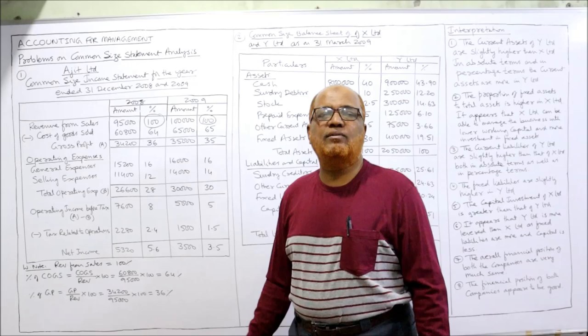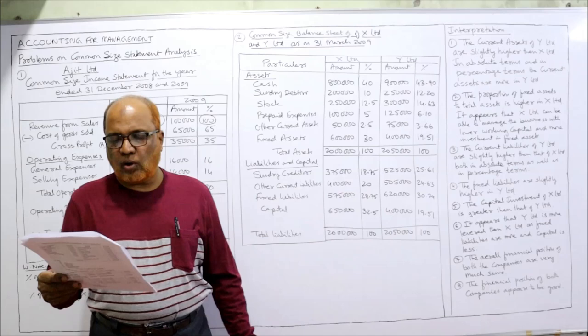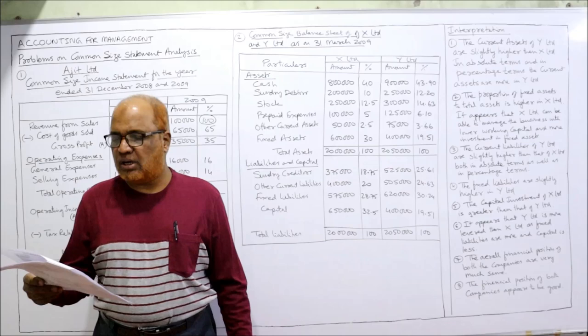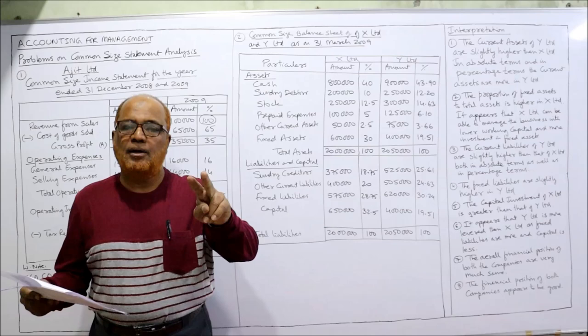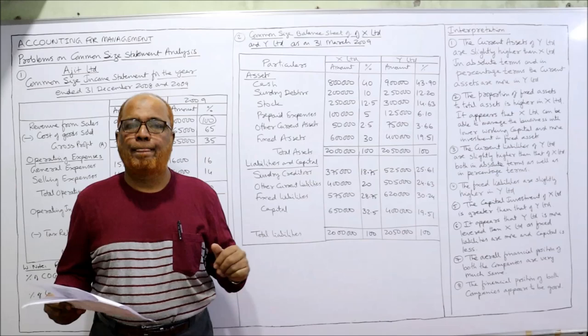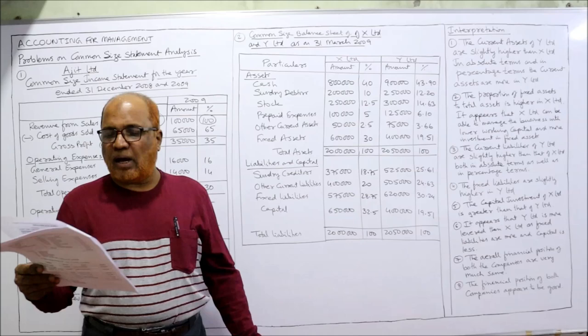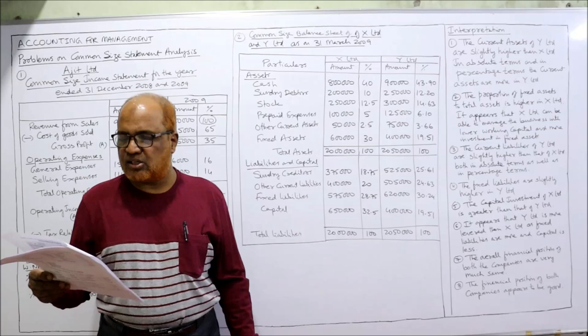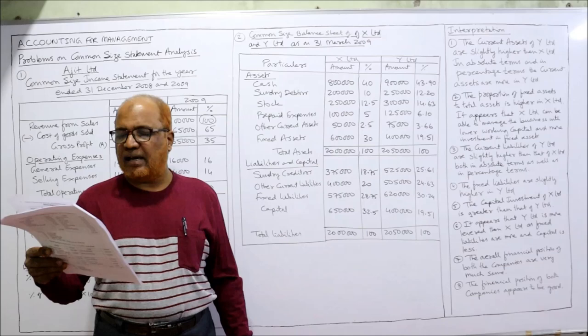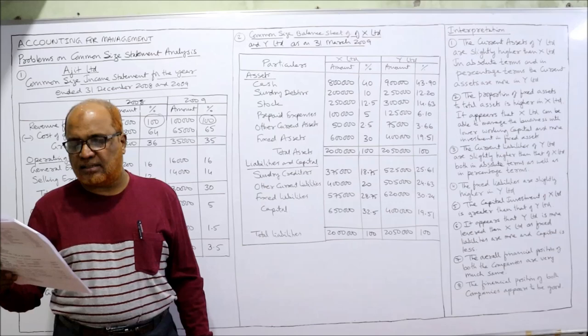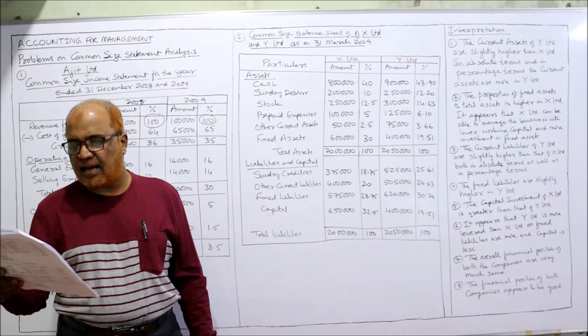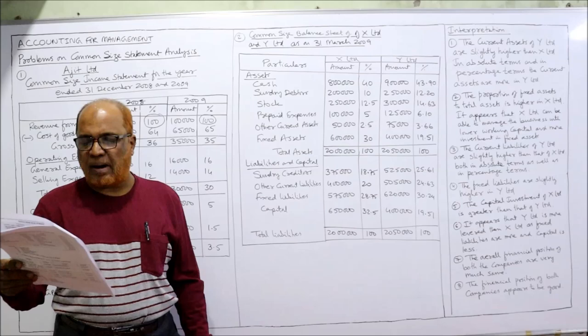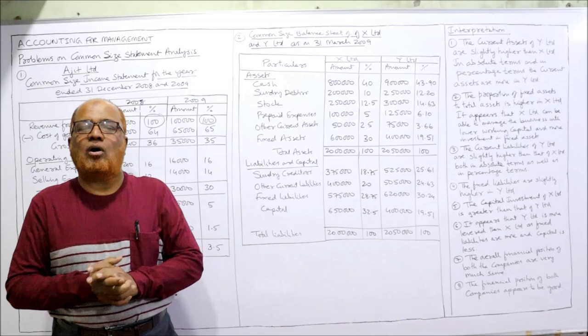The next problem: the following are two balance sheets of X Limited and Y Limited as on 31st March 2009. This is an inter-firm comparison — one company compared with another. The previous problem was intra-firm, within the same firm across years. Assets given: cash, debtors, stock, prepaid expense, other current assets, fixed assets. Total assets of X Limited: 20 lakh; total assets of Y Limited: 20 lakh 50,000. Liabilities include sundry creditors, other current liability, fixed liability, and capital.